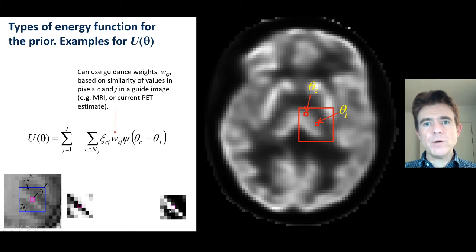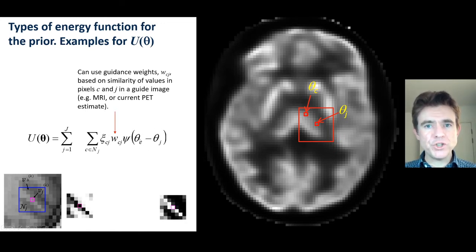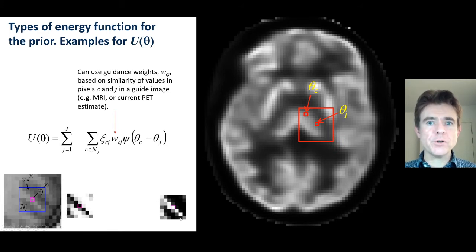This delivers a set of weights that control our potential function operating on these pixel differences. Along this diagonal, the weights are all more or less one, which means the energy function will be active along that diagonal, meaning we care about how different the pixels are in the PET image.